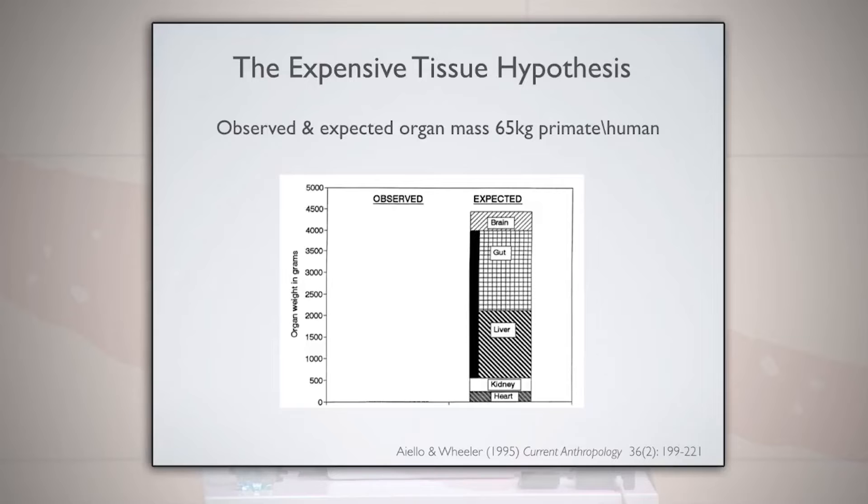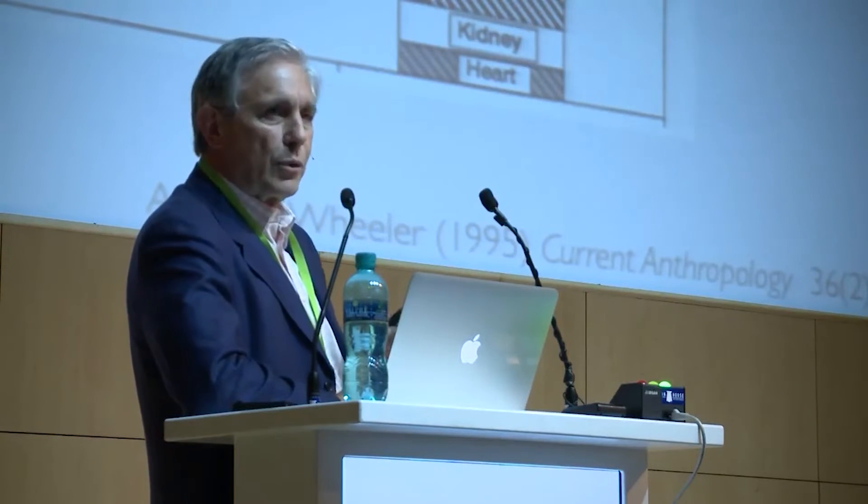This is where Aiello and Wheeler took off. They said, let's take a look — if we have a primate, a 65-kilogram primate, and break down all the components of its body and measure the metabolic rates of each one, how are they going to be spread out? The brain has a little bit of the metabolic rate, the gut has a whole lot, the liver has a fair amount, the kidneys, the heart. The muscles, strangely enough, in terms of resting metabolic rate, are not very much — only about 4% or 5% of the total. The brain makes up a huge amount in humans, and the gut takes up a lot because it's very metabolically active.